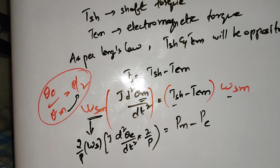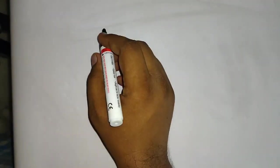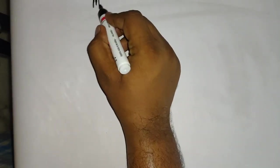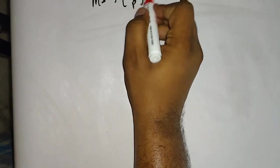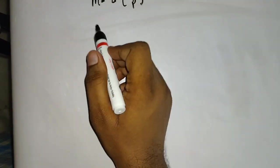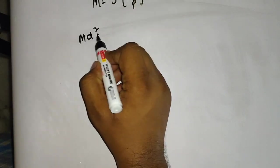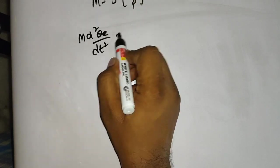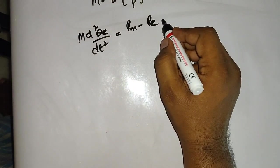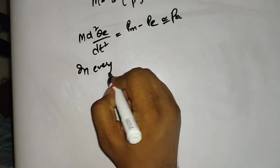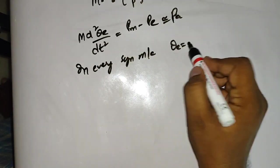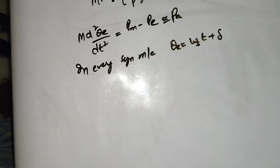From the last Dynamics of Synchronous Machine class, we know that the moment of inertia M = J · (2/P)² · ω_S. Using this on the left-hand side, I get: M · d²θ_E/dt² = P_M minus P_E. Letting P_M minus P_E equal P_A (accelerating power), and noting that in every synchronous machine θ_E = ω_S · t + δ, where δ is the load angle.